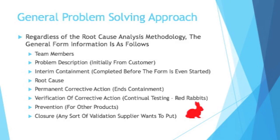The form will also ask for prevention. Good customers will ask this too — it's annoying as a supplier because it means more work, but a customer serious about protecting themselves from nonconformities will ask how you plan to prevent this problem in your other parts. If you already make multiple parts for a customer and have messed up one, what's to stop you from messing up another? Most corrective action forms also have a closure section for anything else the supplier wants to mention not covered in previous sections.